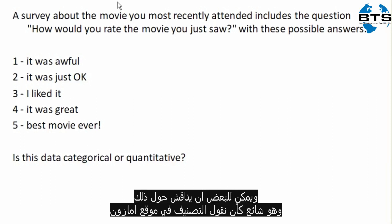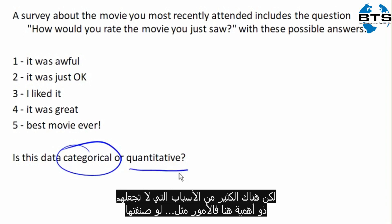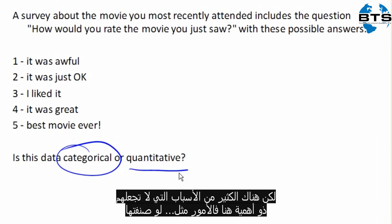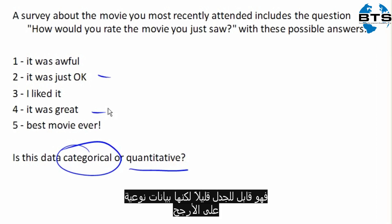Now, some people might argue with this. In fact, it's very common — like ratings on Amazon — for people to go ahead and treat this as quantitative data, and to do things like average these and add them up. But there are a lot of reasons why that doesn't make sense here. If I rate it as a 2 and you rate it as a 4, I guess you could say on average we rated it a 3, but does this mean that you liked it twice as much as I did? I don't think so. So this is slightly debatable, but this is probably categorical data.